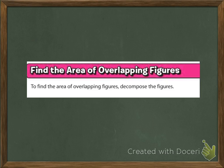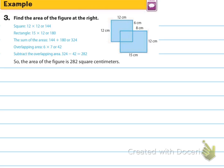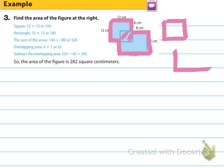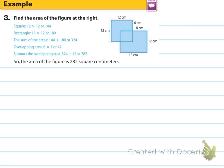Now we're going to talk about overlapping figures. To find the area of overlapping figures, we decompose them. Find the area of the figure at the right: the square is 12 by 12, and the rectangle is 12 by 15. The sum of those areas would be 324. But this area right here is overlapping, so that's not the area of this combined shape — it's the area of each shape separately. So we need to find the area of the overlapping region and subtract it from that 324.